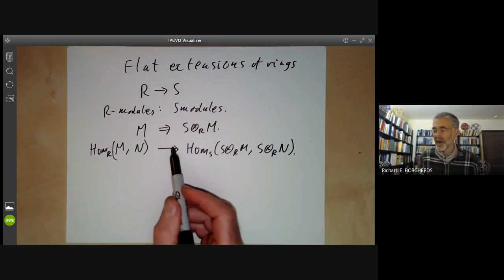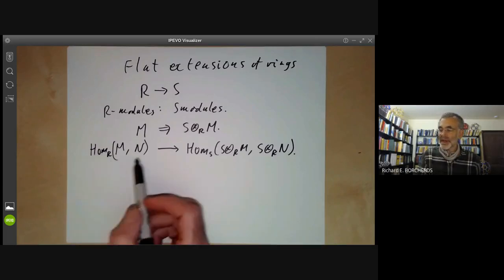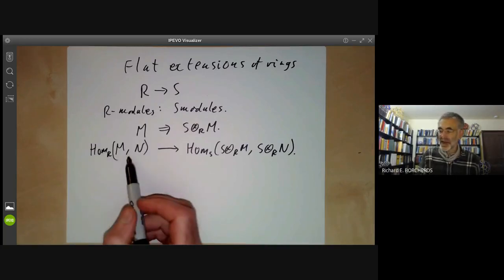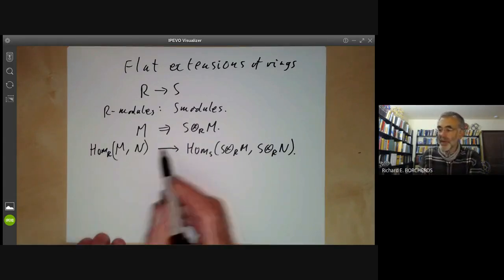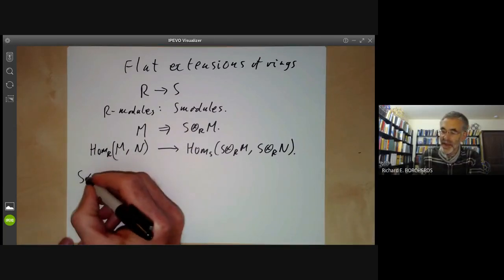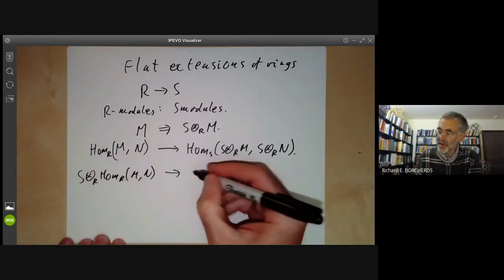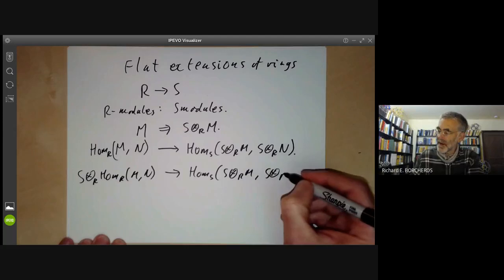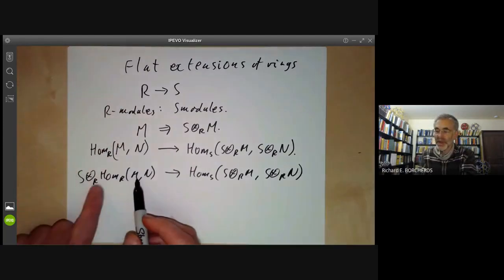The answer is usually no — there's no particular reason why it should be an isomorphism. For example, the right-hand side is an S-module, but there's no S-module structure on the left-hand side. What we forgot to do was convert the left side into an S-module. So let's try again and take S tensor over R of Hom_R(M, N), and map this to Hom_S(S⊗_R M, S⊗_R N).